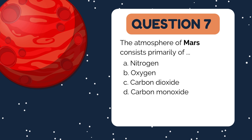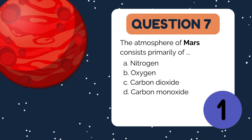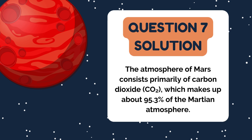The next question is on the red planet. The atmosphere of Mars consists primarily of: A. Nitrogen, B. Oxygen, C. Carbon dioxide, D. Carbon monoxide. The answer is C. Carbon dioxide. About 95.3% of Mars' atmosphere is CO2, with only trace amounts of other gases like nitrogen and argon. This thin, CO2-rich atmosphere contributes to Mars' frigid temperatures and inability to support liquid water on its surface.